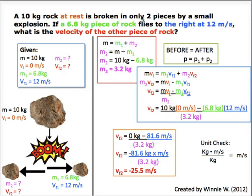A 10 kilogram rock at rest is broken in only two pieces by a small explosion. If a 6.8 kilogram piece of rock flies to the right at 12 meters per second, what is the velocity of the other piece of rock?